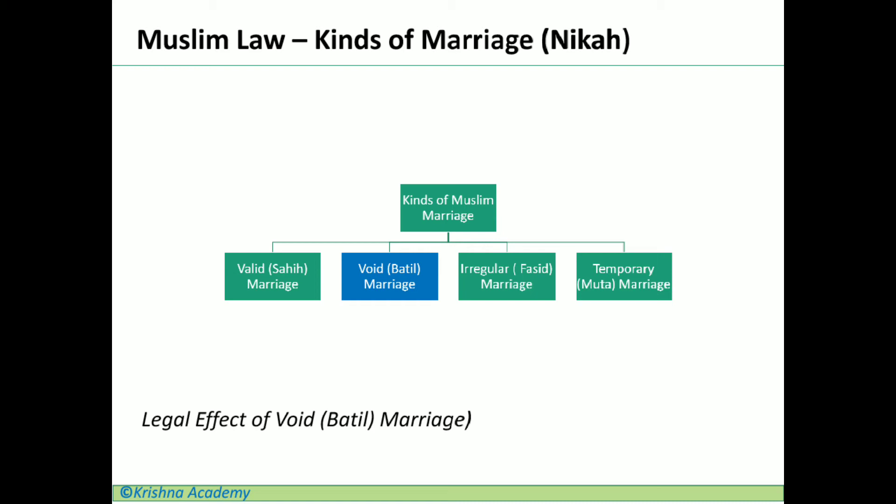The legal effects of void marriage are: there are no mutual rights, children are illegitimate, and there is no right of meher. There are no legal rights at all — just as if there were no marriage. Most importantly, parties can marry again as per their wish, because in the eyes of law there is no existence of such a marriage, so there is no restriction from a legal point of view.